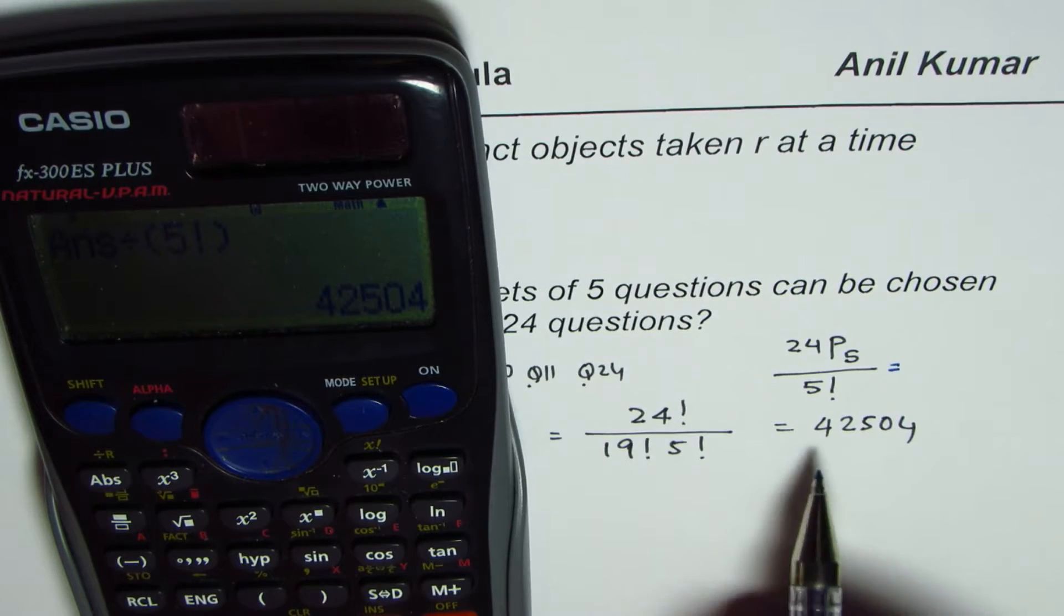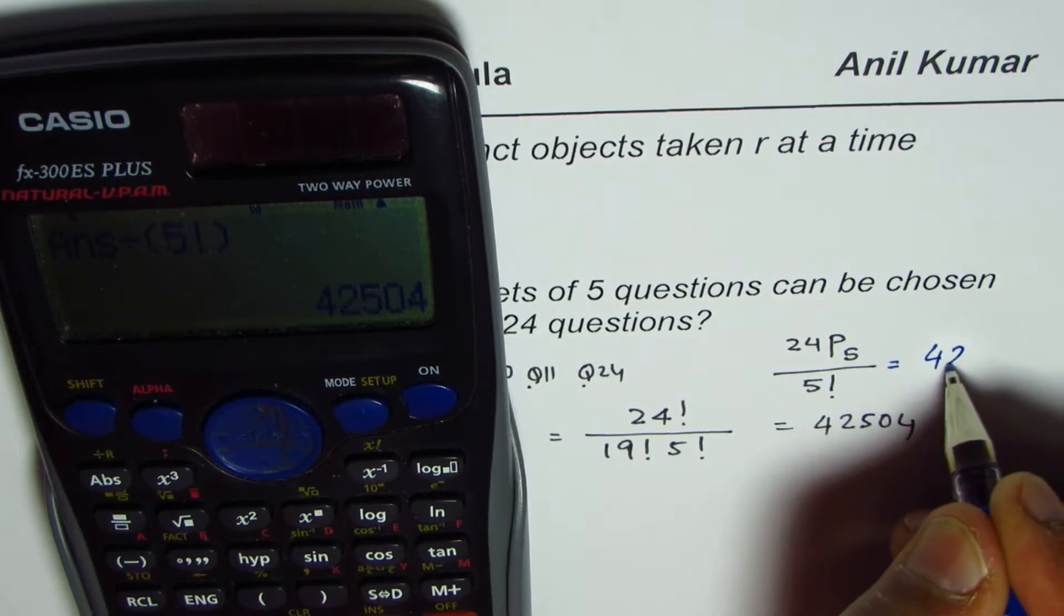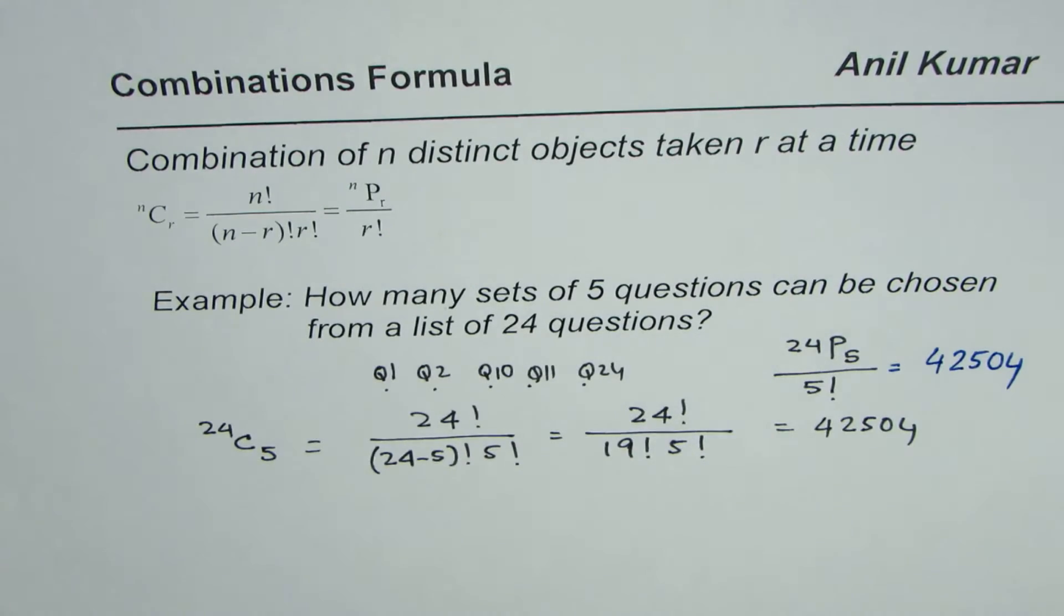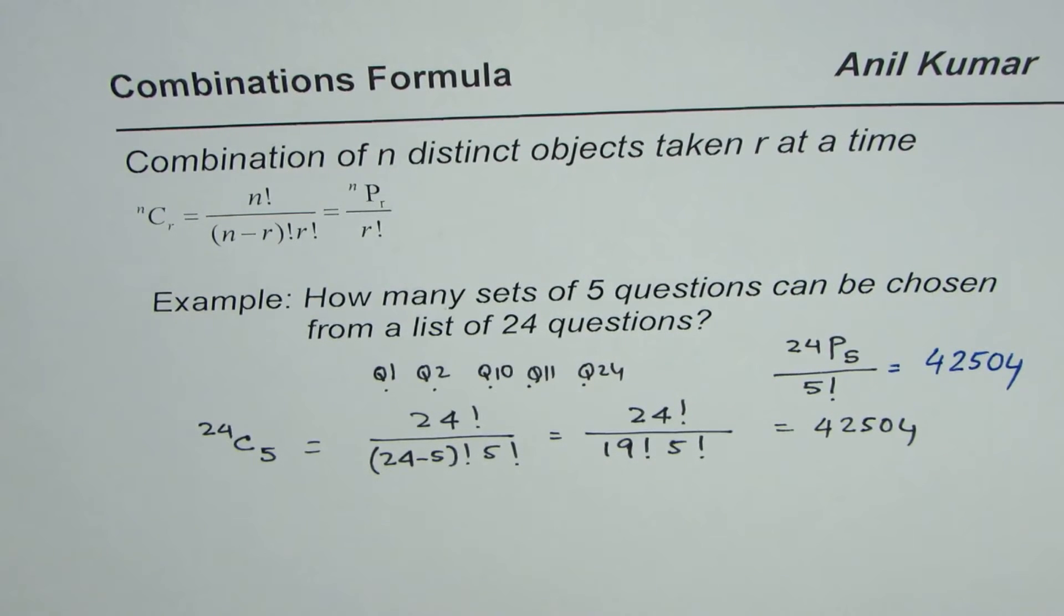Which equals exactly the same number, which is 42,504. So that confirms our concept about the relation between permutations and combinations.